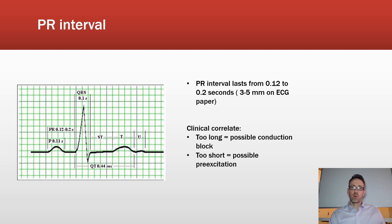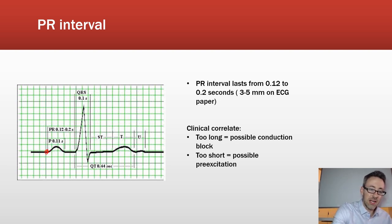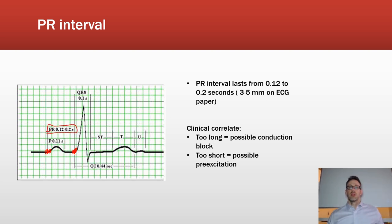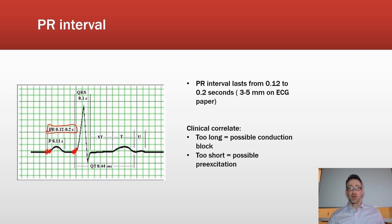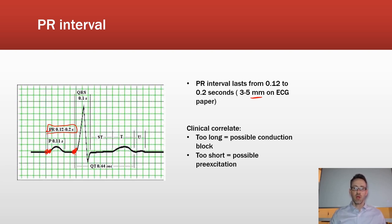Next we look at the PR interval, which is measured from the beginning of the P wave to the start of the QRS complex. The PR interval should be between 0.12 and 0.2 seconds — that's three to five small boxes, or half to one full large box.